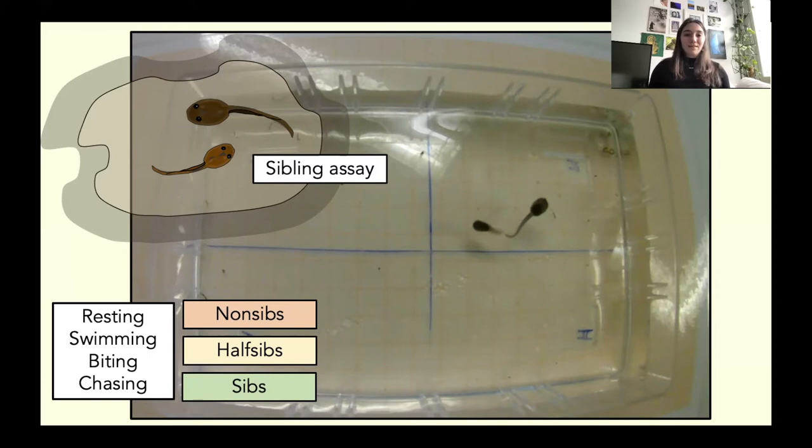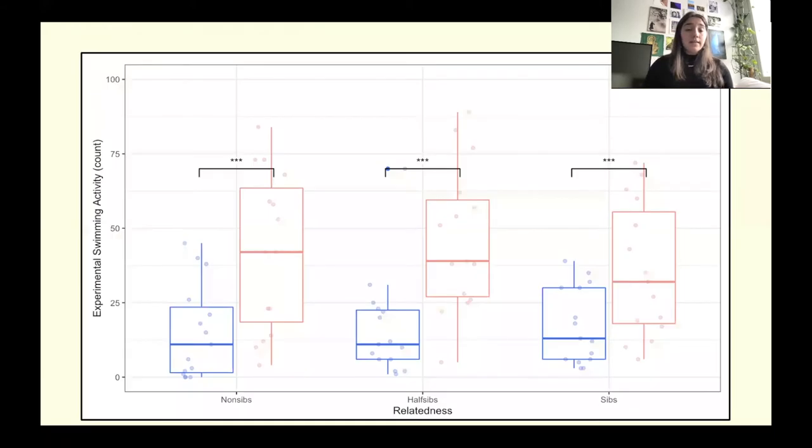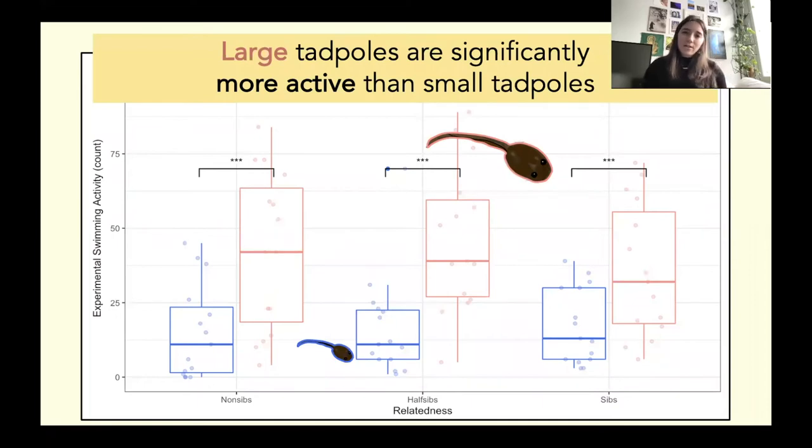So let's jump in a little bit to our results. The first result I have is about activity, and when looking at these box plots you can quickly see that the pink box plots, which indicate the large tadpoles, are higher than these blue box plots. So we're seeing that these large tadpoles are significantly more active than small tadpoles, and this makes sense because the large tadpoles are kind of hunting the smaller ones. The small tadpoles are also sometimes freezing in the corner to perhaps decrease the possibility of detection by the larger one.